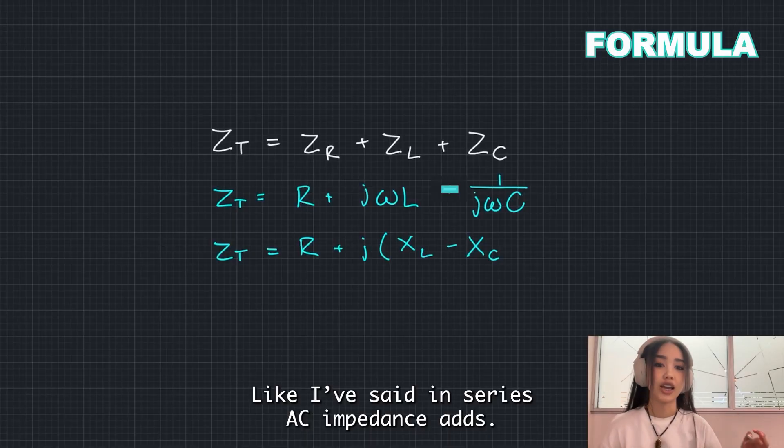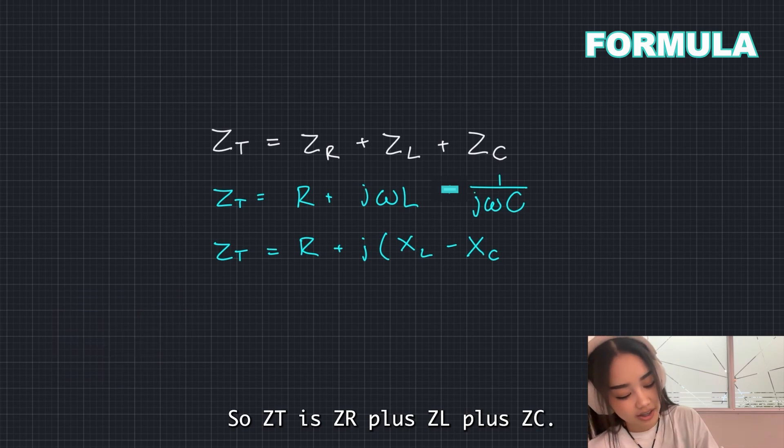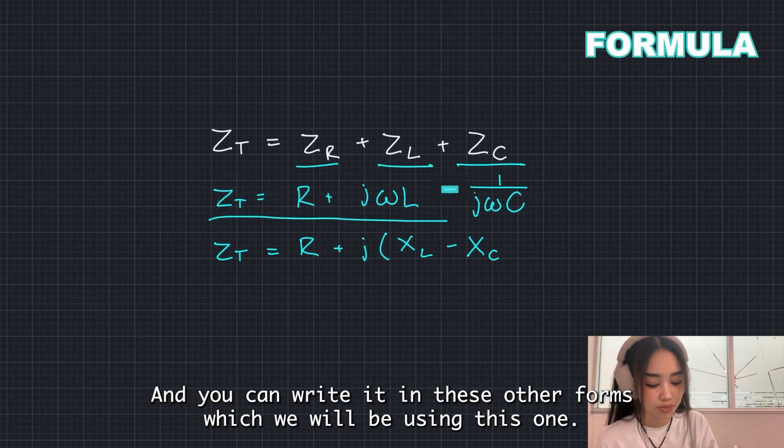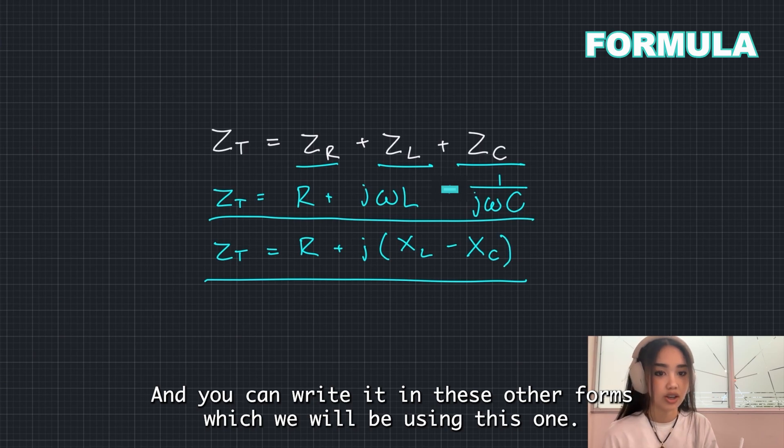Like I've said, in series AC, impedance adds. So, ZT is ZR plus ZL plus ZC. And you can write it in these other forms, which we will be using this one.